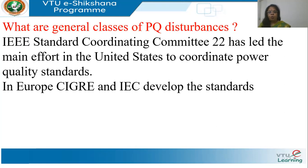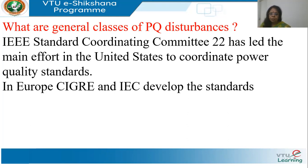What are the general classes of power quality disturbances? Normally, when performing such an enormous task, the first step is to form coordinating committees or task forces. These committees come together, brainstorm, and come up with standards and definitions. The IEEE Standard Coordinating Committee 22 has led the main effort in the United States to coordinate power quality standards.